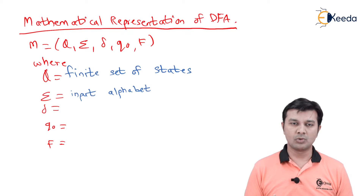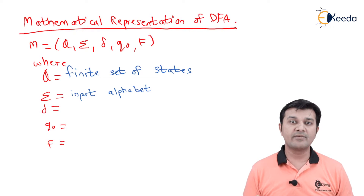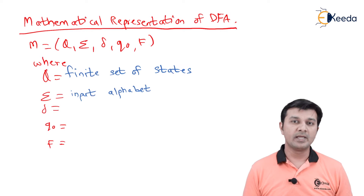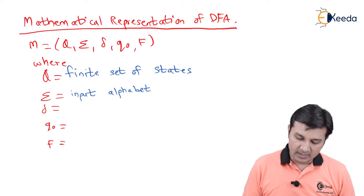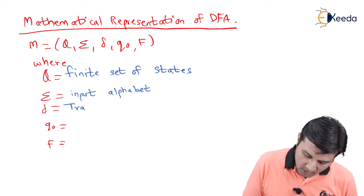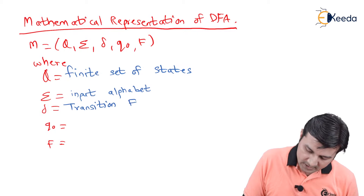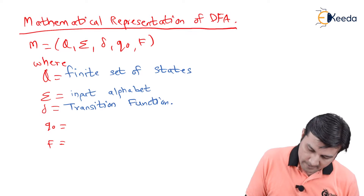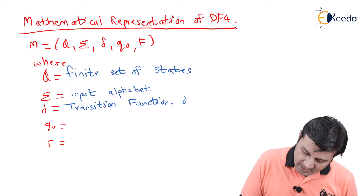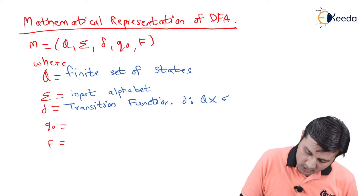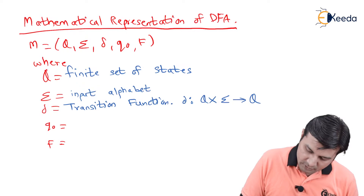Moving to the next and very important part of DFA — in fact, this is the heart of it — called δ, the transition function. This transition function δ is defined as Q × Σ → Q.